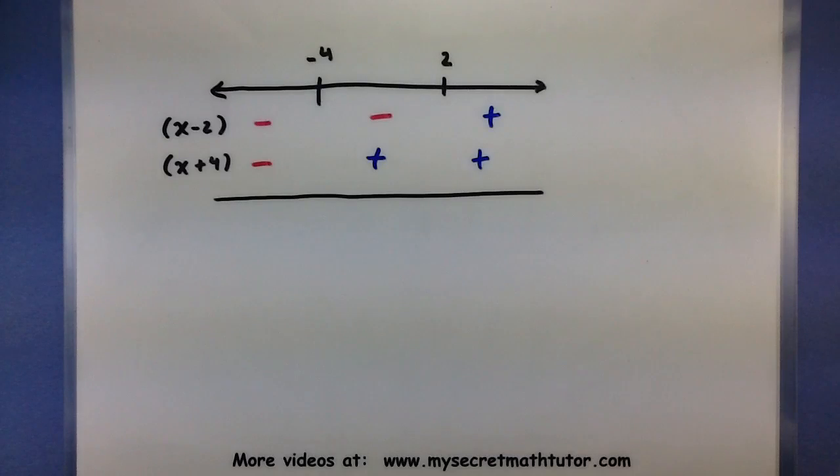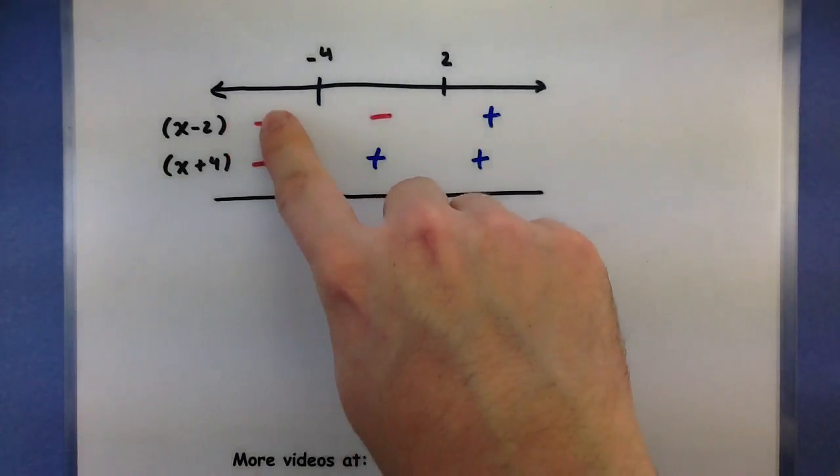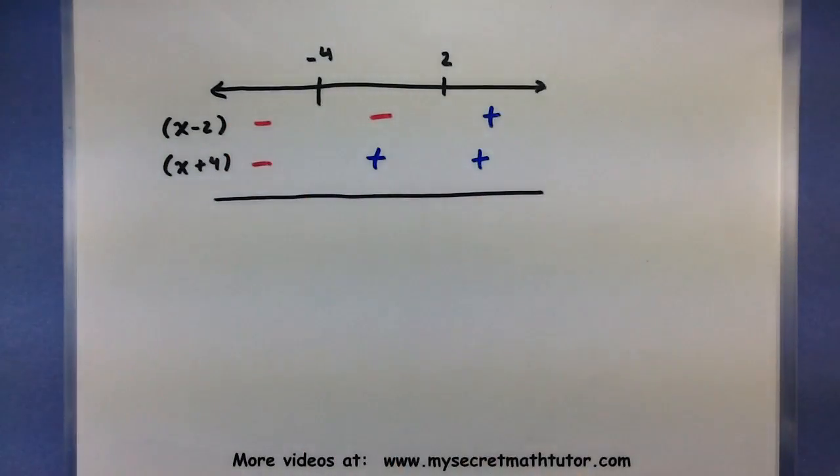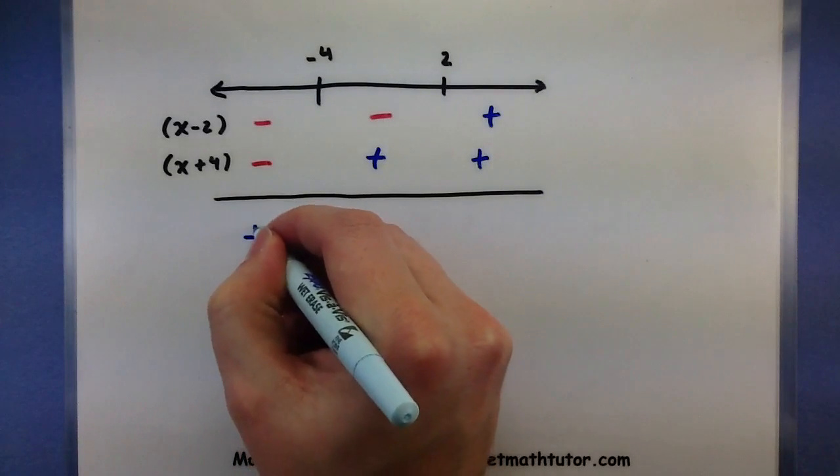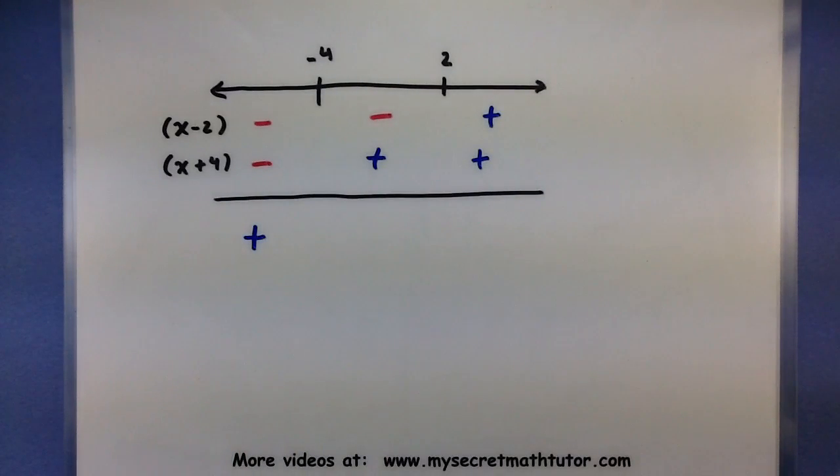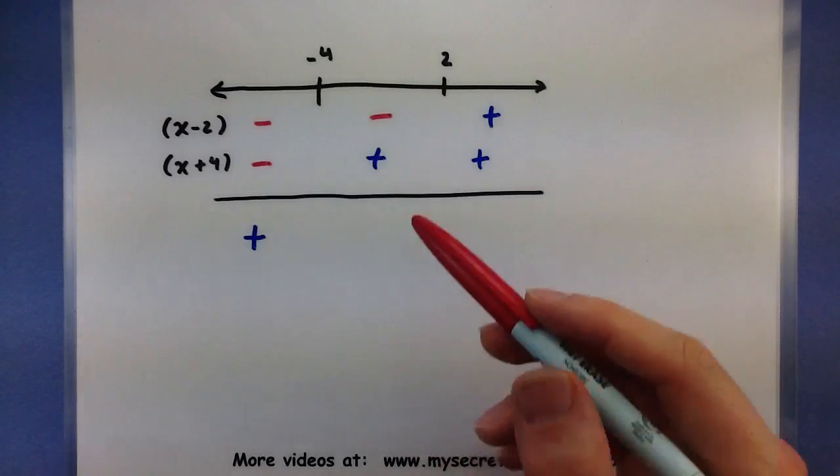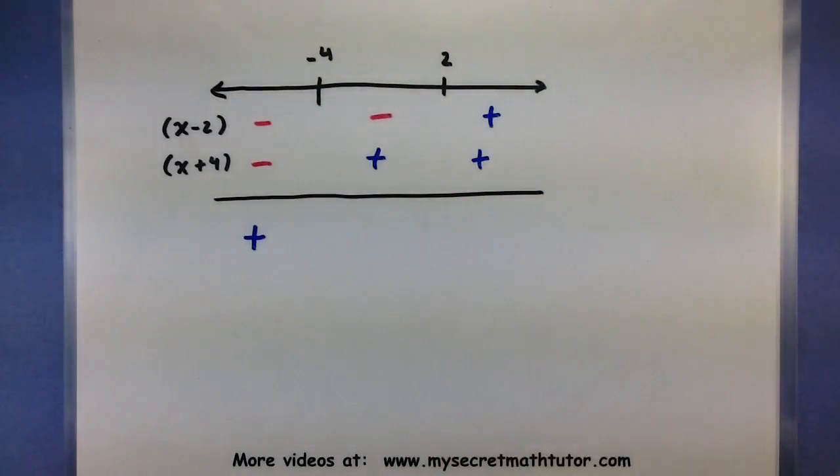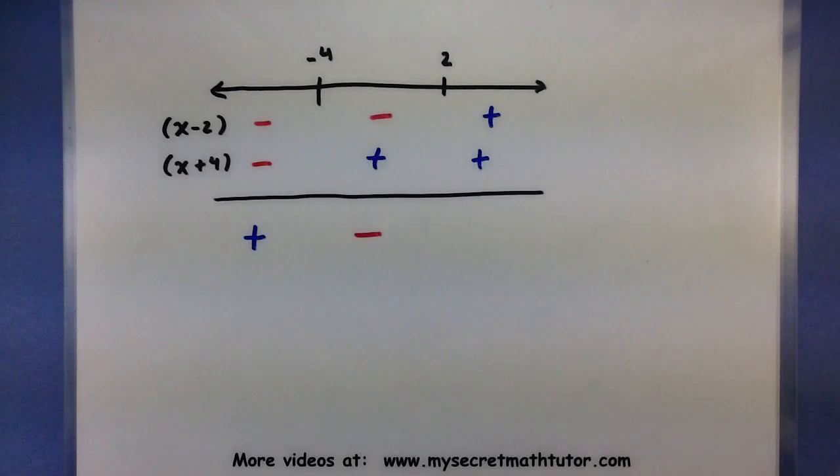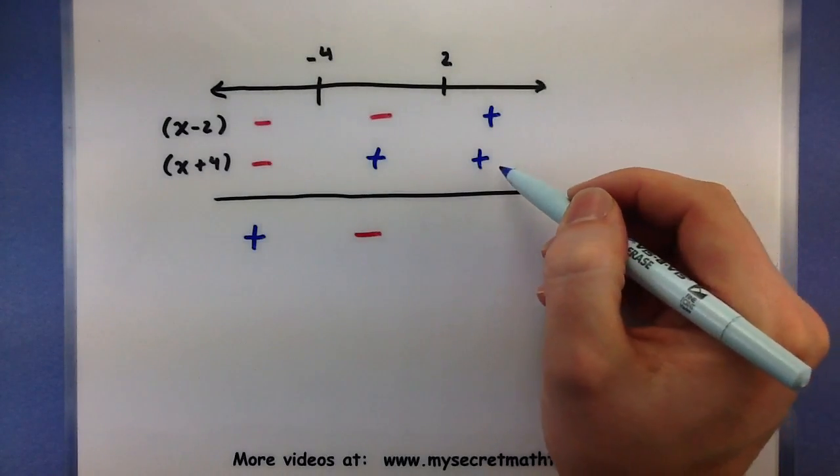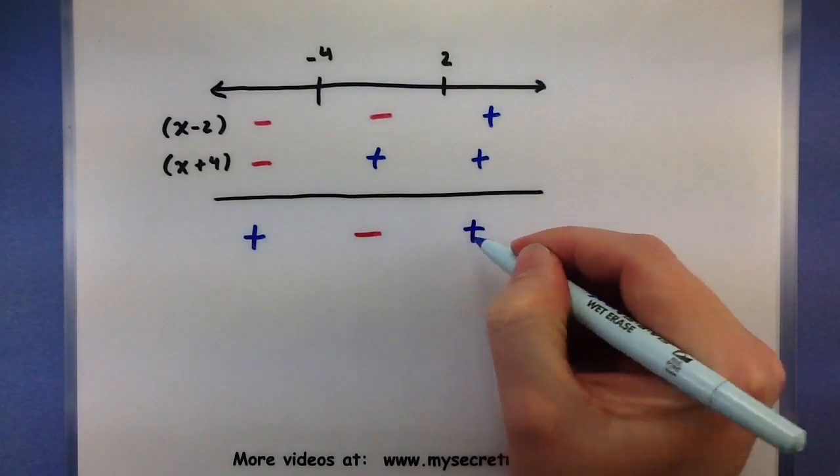So now I'm going to examine their sign. So if this guy is negative, and this guy is negative, and they're being multiplied together, then the overall result will be positive. For the middle interval, negative times a positive would be negative. And for the last one, positive times a positive, positive.